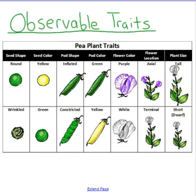Mendel looked at pea plants and saw traits that could easily be observed and recorded. Seed color was either yellow or green — a very obvious trait. Seed shape was either round or wrinkled. The flower was either purple or white, and the pod color was either green or yellow. These easily observable traits were far simpler to study than blood type in humans or microscopic bacteria.